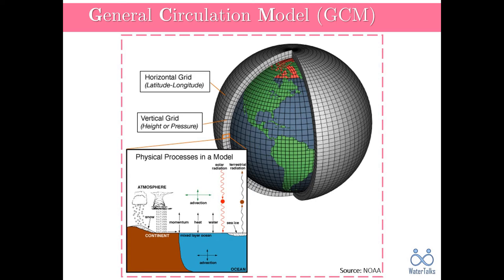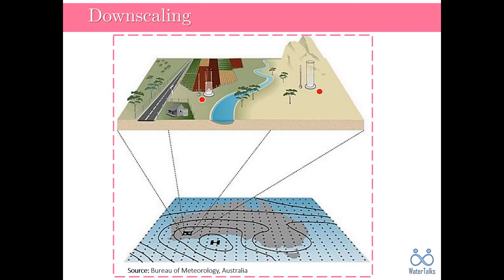However, GCMs are too coarse to capture what happens at regional and local scales, especially in areas of complex physiography, and therefore are not suitable for many climate change impact assessment studies. As a result, an intermediate model called a downscaling model is required to transform the coarse resolution outputs of GCMs to fine-resolution local hydroclimatic variables such as precipitation.